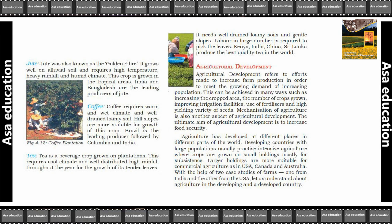Ways to achieve agricultural development include increasing the crop area, the number of crops, improving irrigation facilities, and using better quality fertilizers and seeds. Mechanization of agriculture is also another aspect of agricultural development. The ultimate aim of agricultural development is to increase food security.